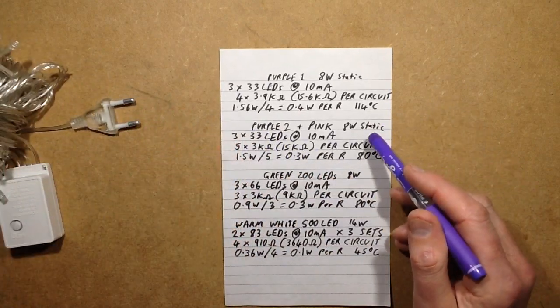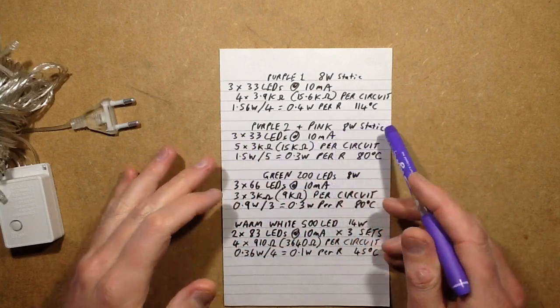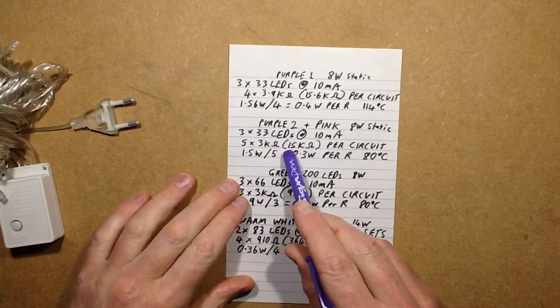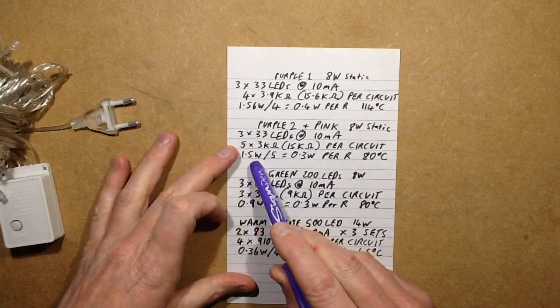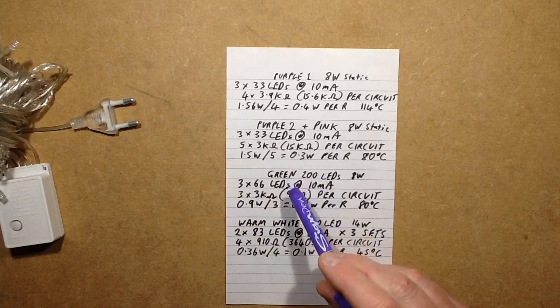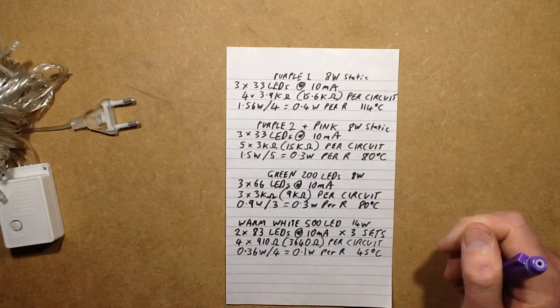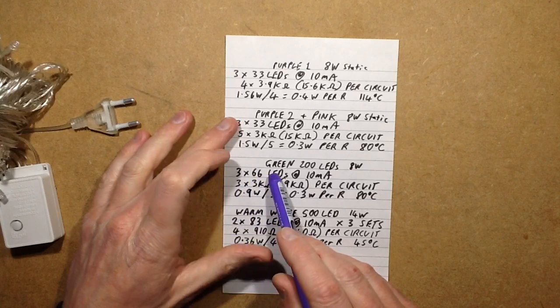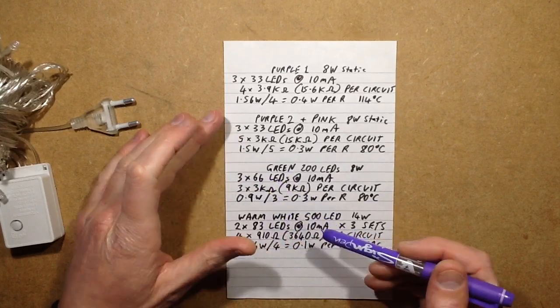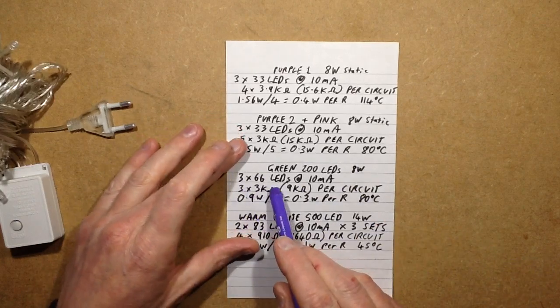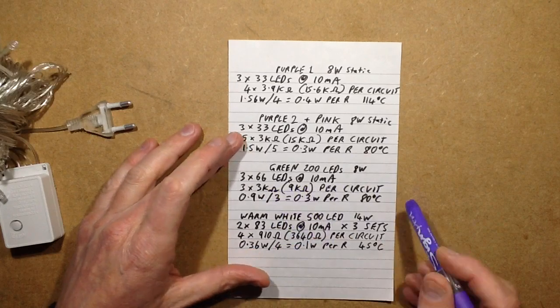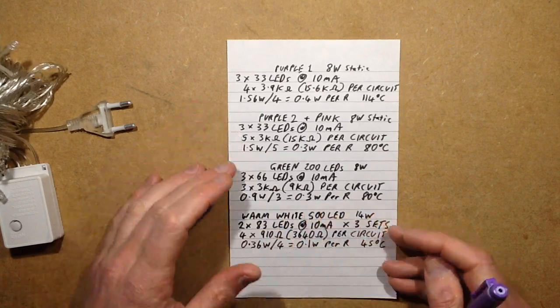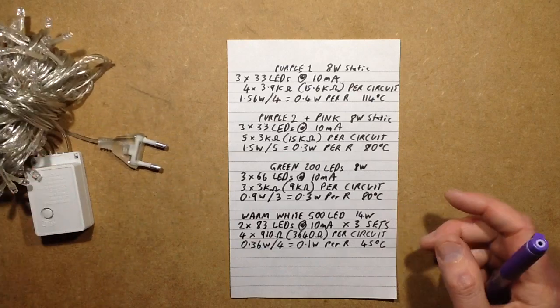I've got another two sets, purple and pink, that I got recently - very Barbie. They've got the 3×33 at 10mA, same 8 watts total rating when they're on static, but they have one extra resistor. They've lowered the value of the resistor, so 5 × 3kΩ, a total of 15kΩ per circuit. That works out 1.5 watts total divided by the 5, roughly 0.3 watts per resistor, and they come out around about 80°C.